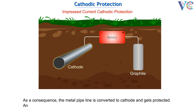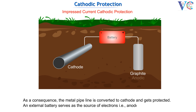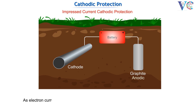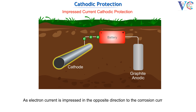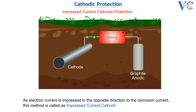And gets protected. An external battery serves as the source of electrons, acting as the anode. As the electron current is impressed in the opposite direction to the corrosion current, this method is called Impressed Current Cathodic Protection.